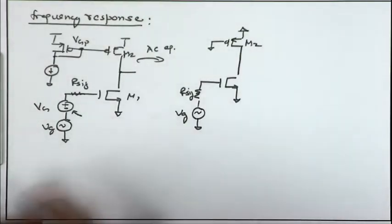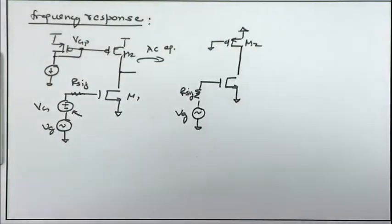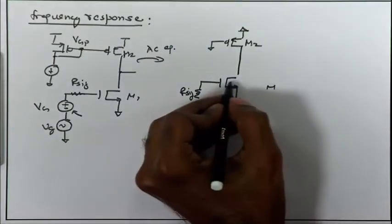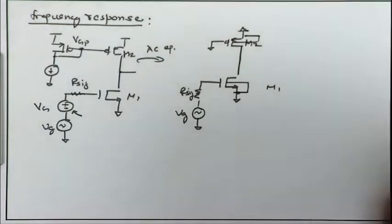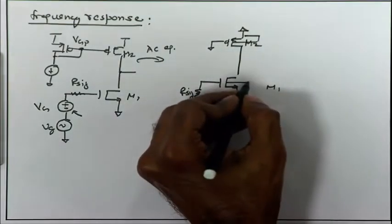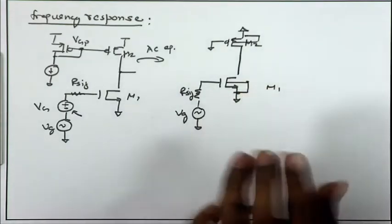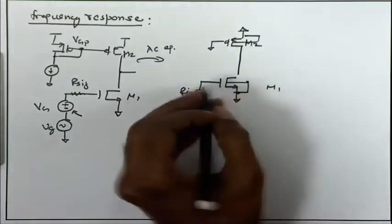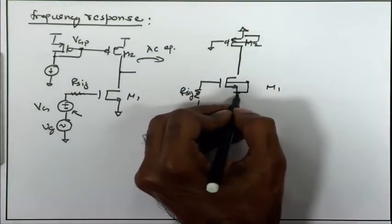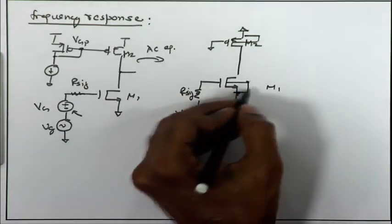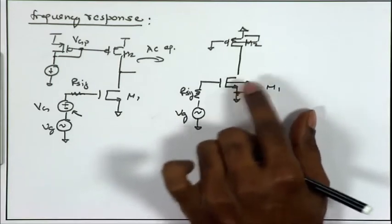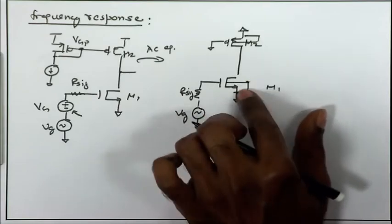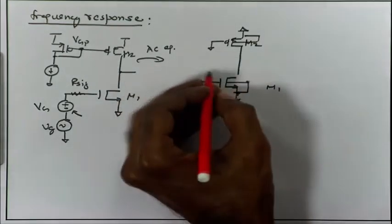For higher frequency analysis, I need to include the parasitic capacitances contributed by M1 and M2. The substrate of M1 is grounded. For NMOS the substrate is at ground, and for PMOS the substrate is at V_DD — also AC ground. This eliminates C_SB, because both body and source are at constant DC potentials, making V_SB small-signal zero. We still need to account for C_GD1.